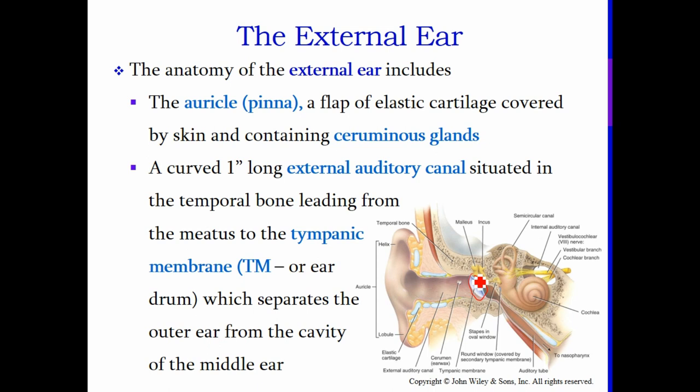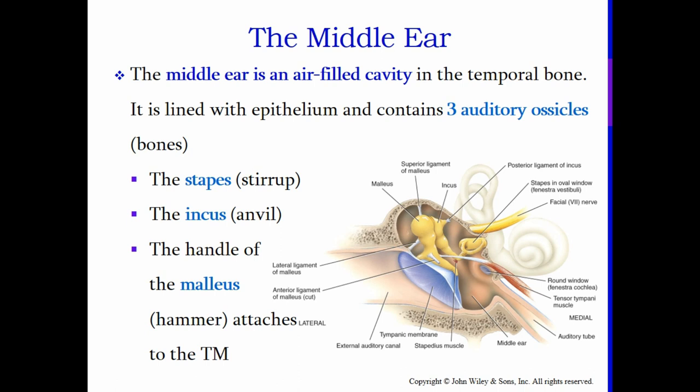Your pinna or auricle funnels sound waves, which travel down your ear canal and then strike your tympanic membrane — your eardrum — and it will vibrate, very similar to a drum. When you strike a drum with a drumstick, the skin vibrates and causes sound waves. Similarly, sound waves hit the eardrum membrane, and those vibrations are then passed on down the line.